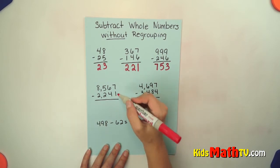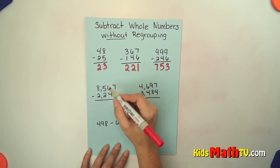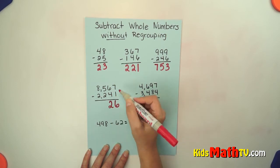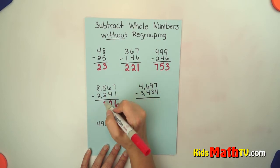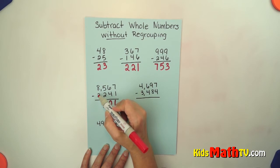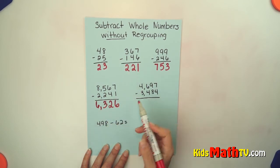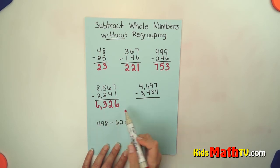Even larger numbers. Same thing. We're going to start in the ones place and move to the left. 7 minus 1 is 6. We have 6 tens minus 4 tens. That gives us 2 tens. 5 hundreds minus 2 hundreds is 3 hundreds. And 8 thousands minus 2 thousands. We have 6,000. So our answer is 6,326.